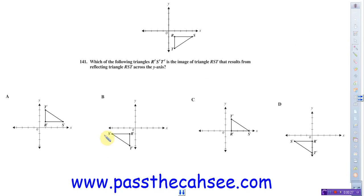It says which of the following triangles R'S'T' is the image of triangle RST. Now this is actually the reflection symbol, and results from reflecting it across the y-axis. So if you're reading this, what you want to highlight here is y-axis. That's important because that tells you what axis you're trying to reflect across.